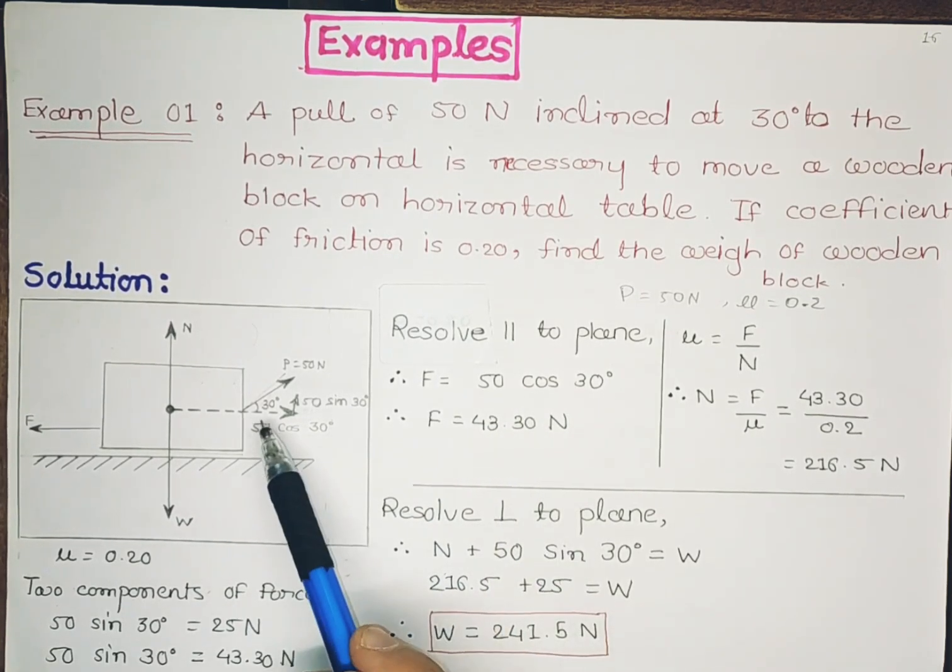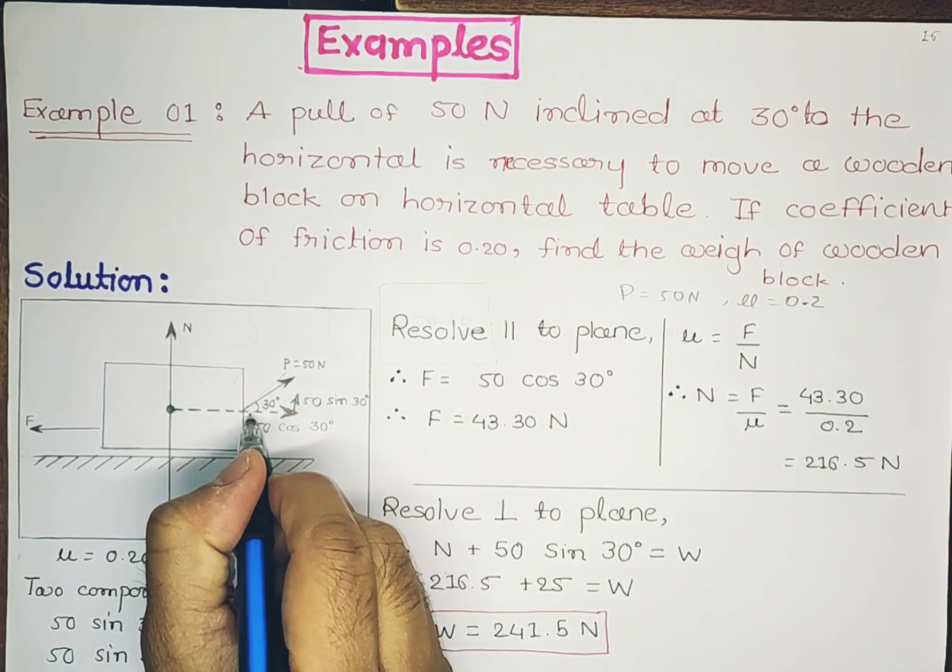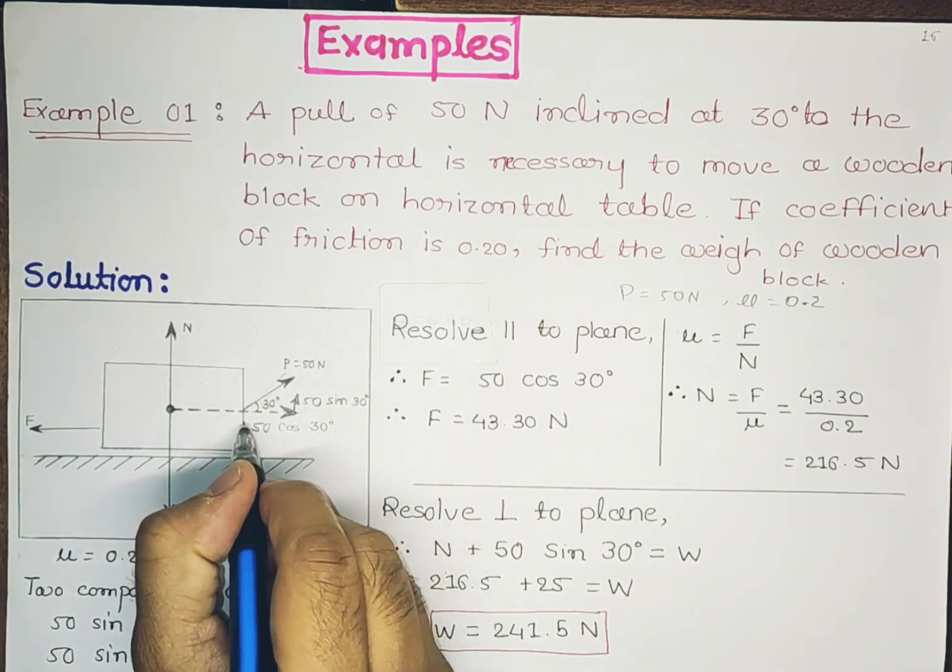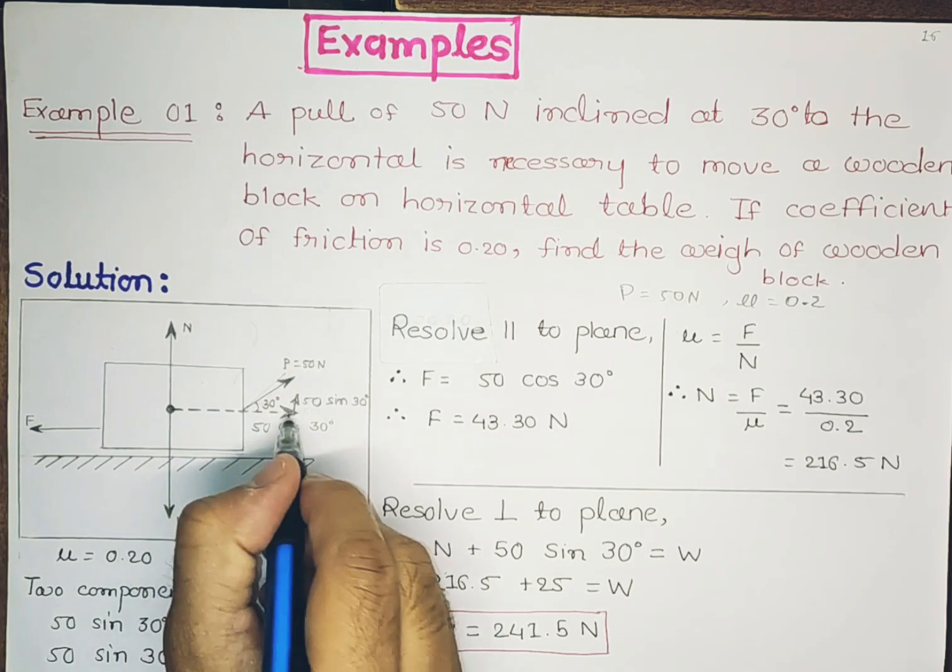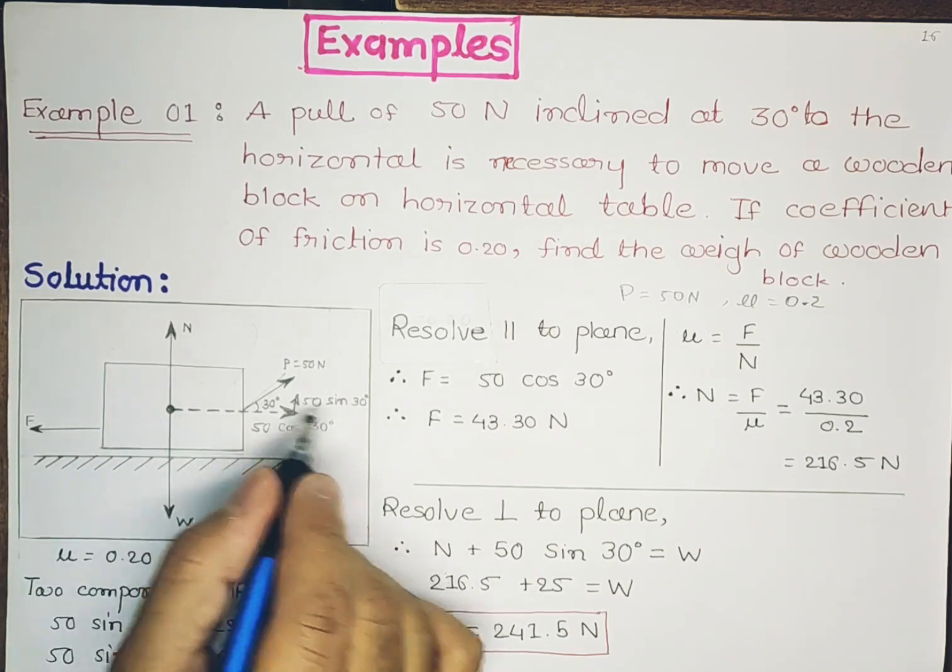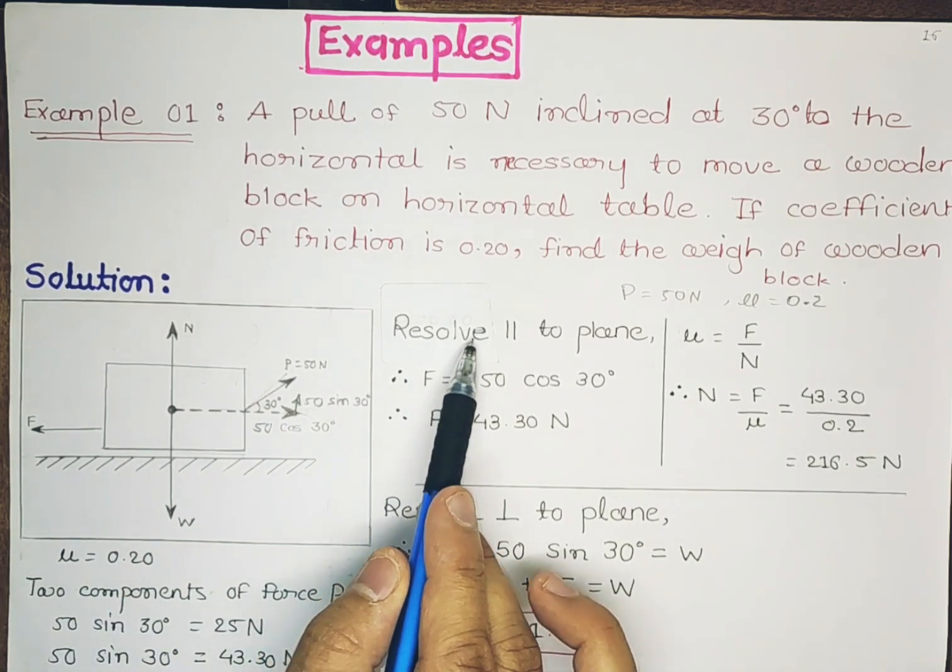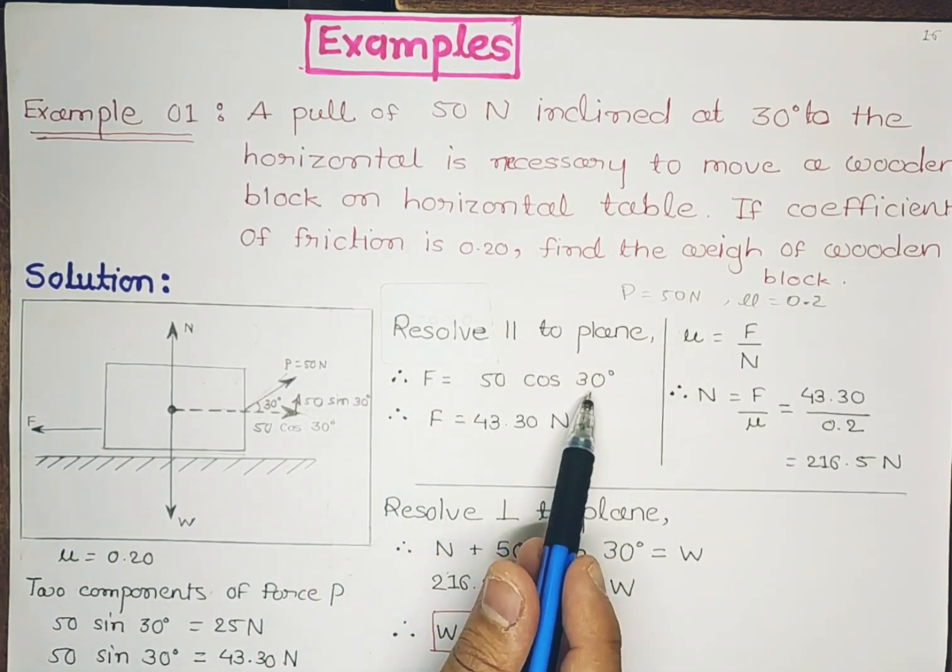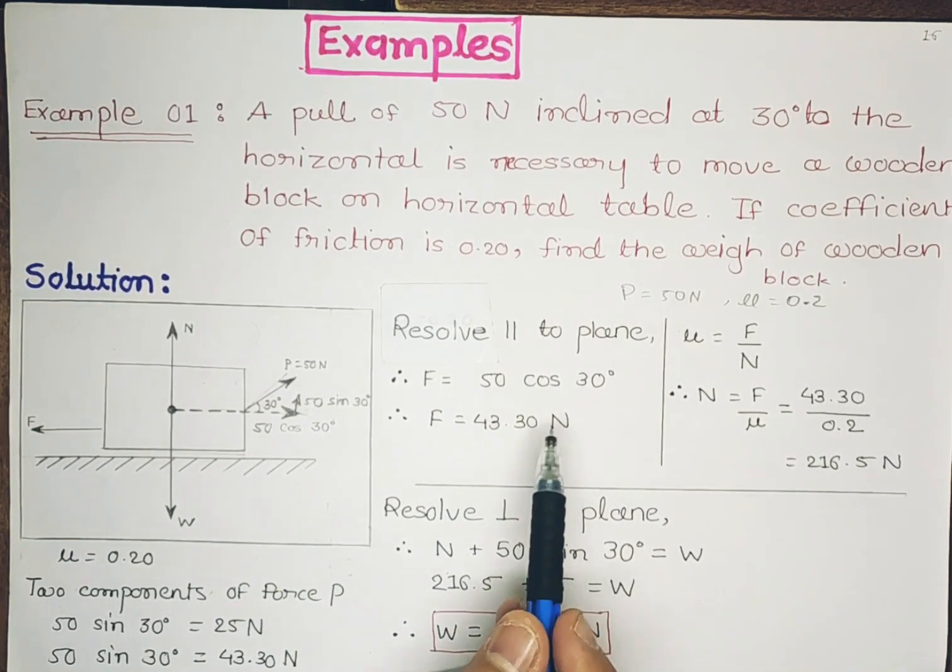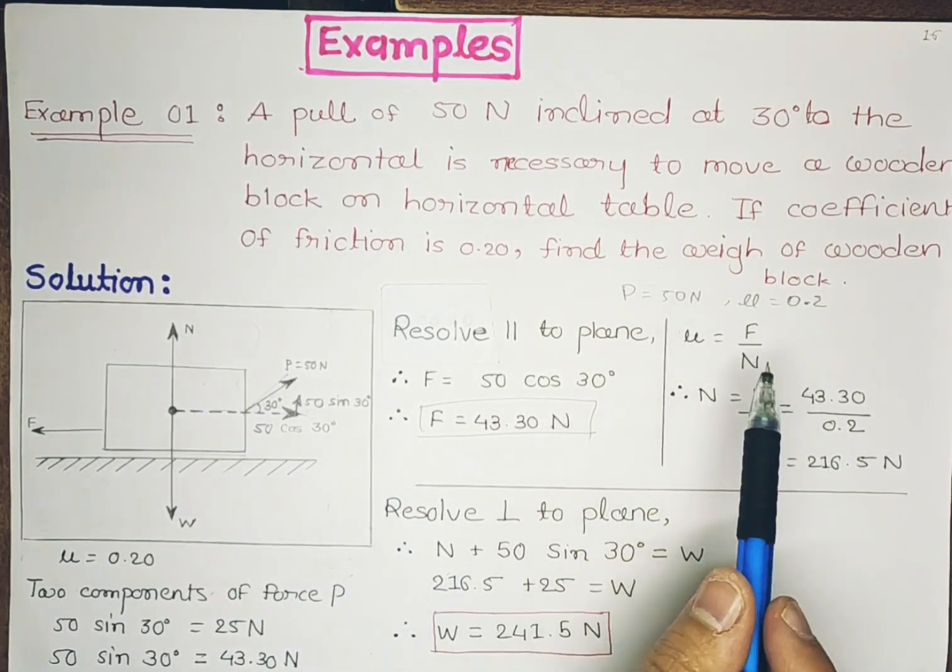F is equal to 50 cos 30°. Due to this force there is one resolved force horizontally, that is 50 cos 30° because this side is adjacent to this angle. There is no other parallel to the plane force. So 50 cos 30°, solving it we get the value of frictional force directly that is 43.3 Newton.